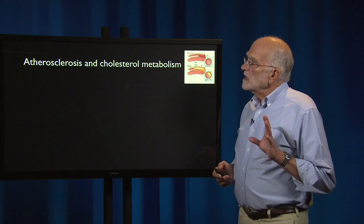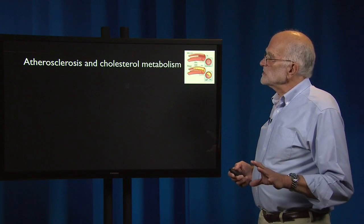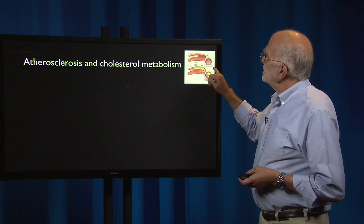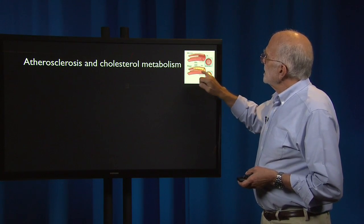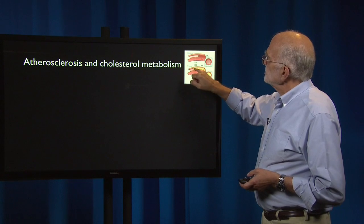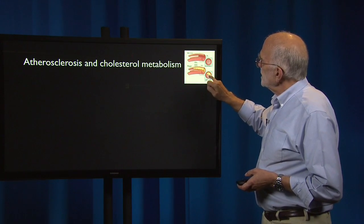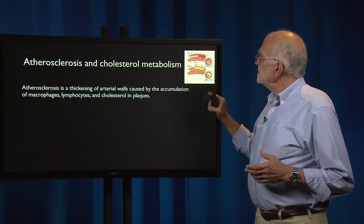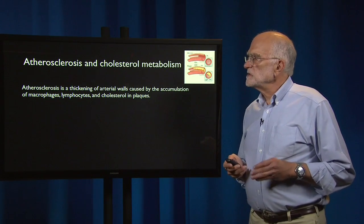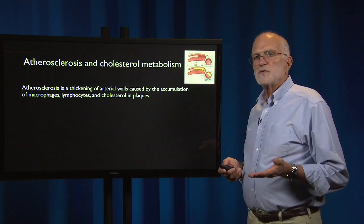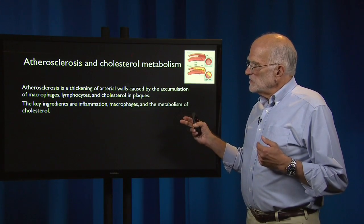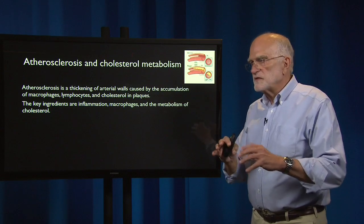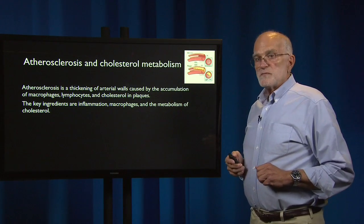Heart and cardiovascular disease come through atherosclerosis mediated by cholesterol metabolism. In this diagram, you can see an artery with plaque building up, which in cross-section is obstructing about half the diameter of the artery. Atherosclerosis is a thickening of arterial walls caused by the accumulation of macrophages, lymphocytes, and cholesterol in plaques. The key ingredients are initially inflammation, then macrophages recruited to the inflamed site, and the metabolism of cholesterol at that site.